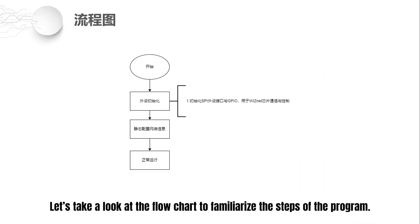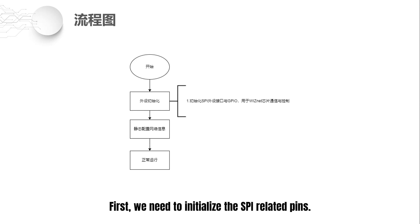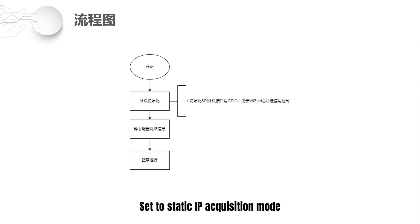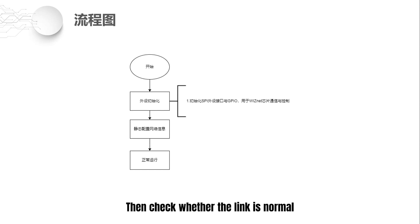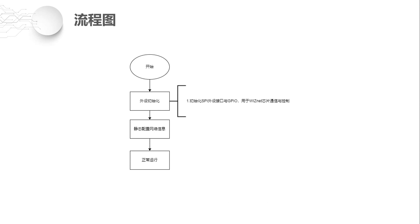Let's take a look at the flowchart to familiarize ourselves with the steps of the program. After starting, first we need to initialize the SPI-related pins, then configure the network address information and set it to static IP acquisition mode. Then check whether the link is normal — if it is abnormal, the program ends. If normal, the program runs normally and prints the configuration information.